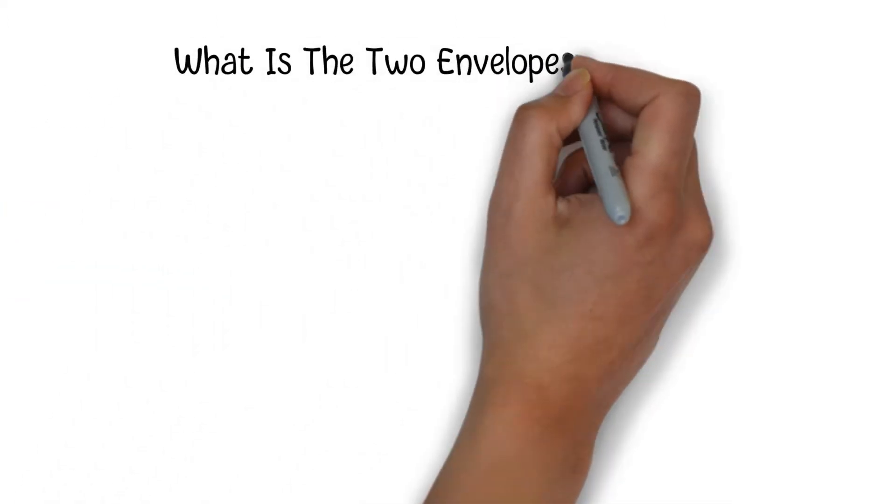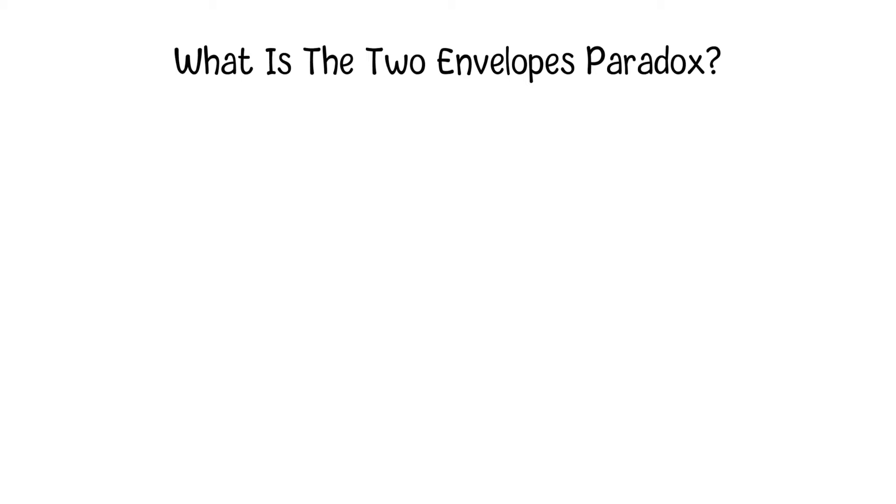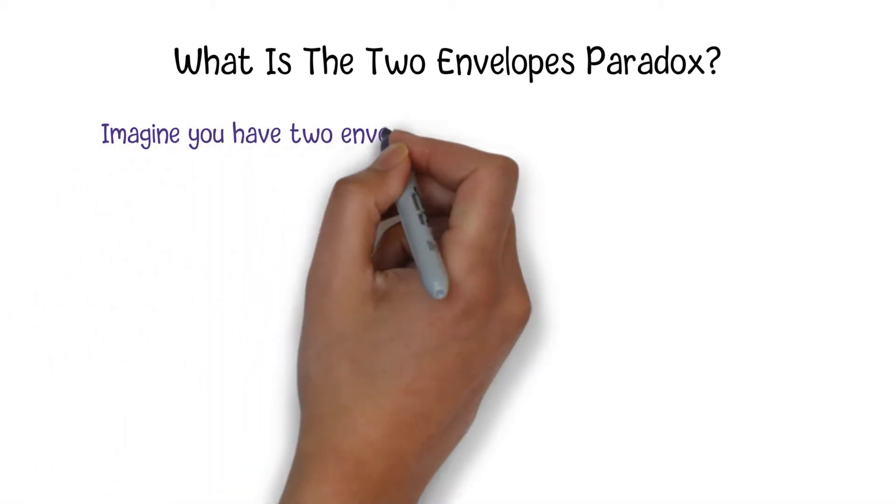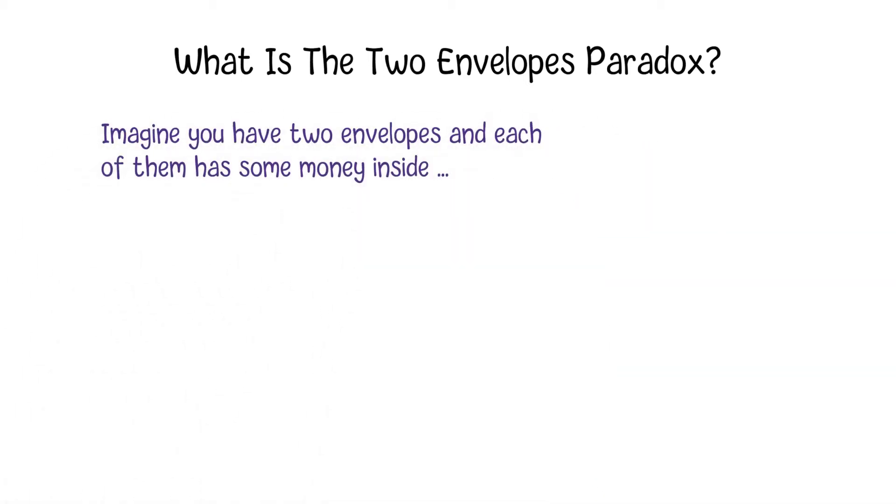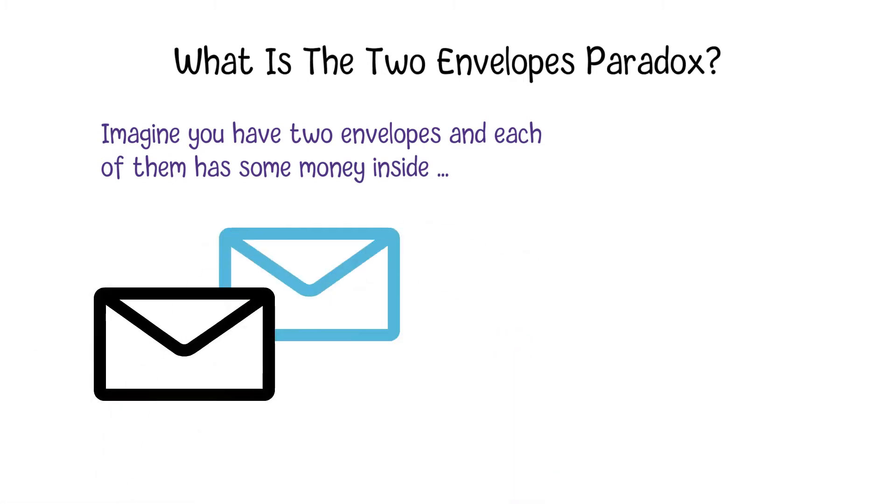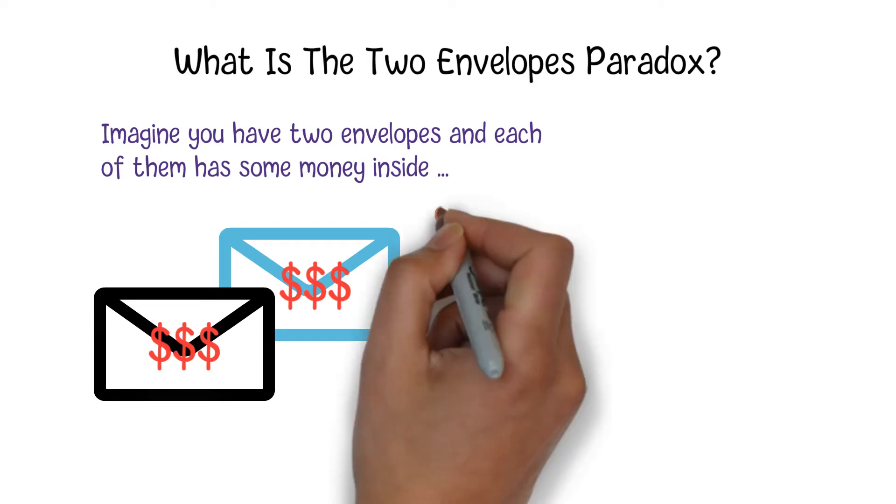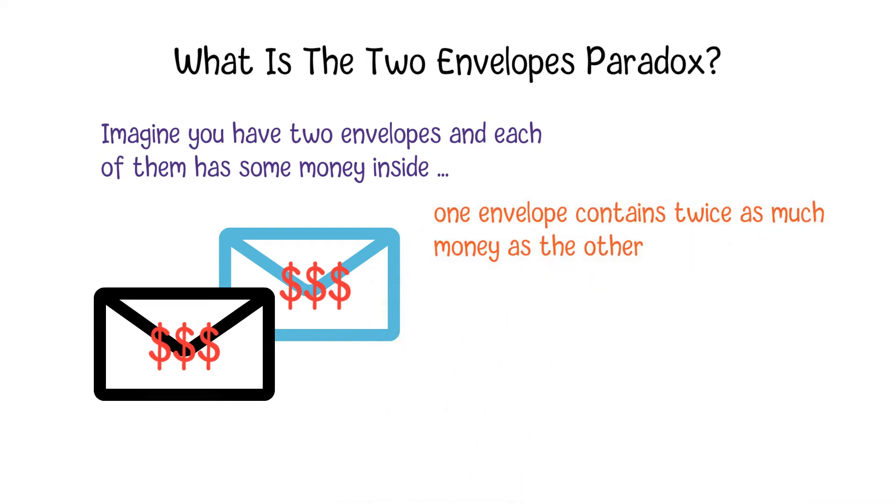The two envelope problem is a famous paradox about probabilities. Imagine you have two envelopes and each of them has some money inside. You don't know the exact amount of money in each envelope. The only information you have is that one envelope contains twice as much money as the other.